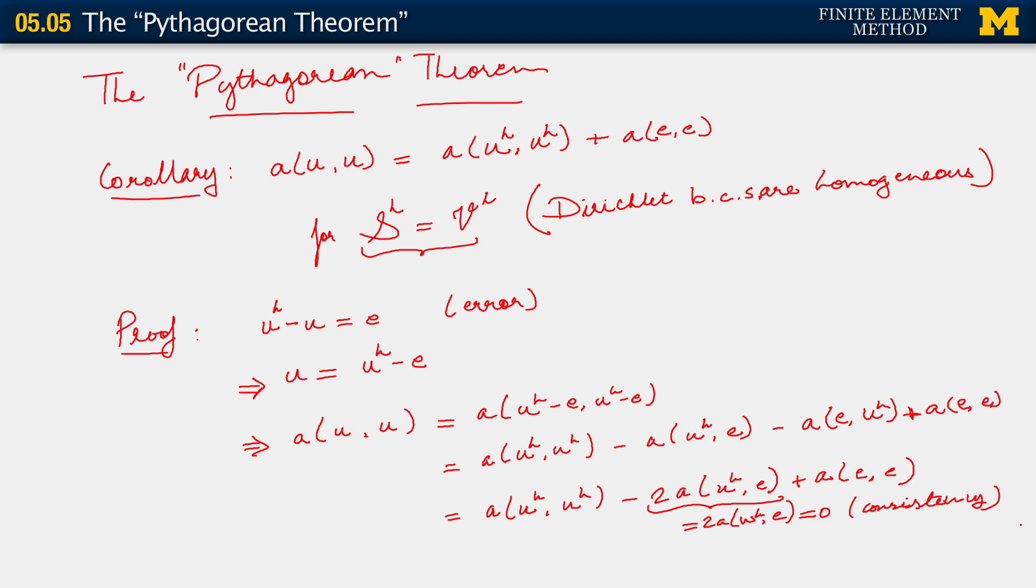And there we have it. What we are left with is the result we set out to prove. This is the energy norm of the finite element solution plus the energy norm of the error. This holds, of course, for problems where the Dirichlet boundary conditions are homogeneous.